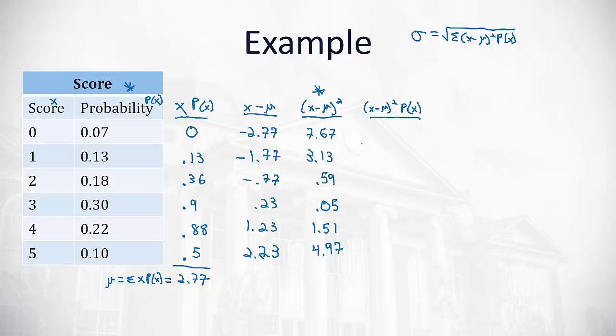So we have 7.67 times 0.07 is about 0.54. Again, I'm rounding to two decimal digits. 3.13 times 0.13 is 0.41. 0.59 times 0.18 is 0.11, and 0.05 times 0.3 is 0.02.